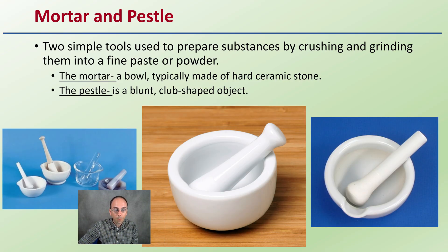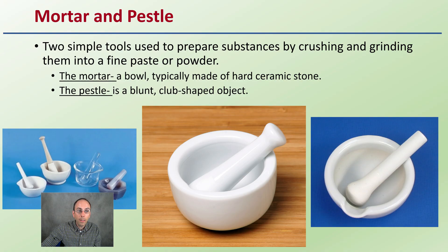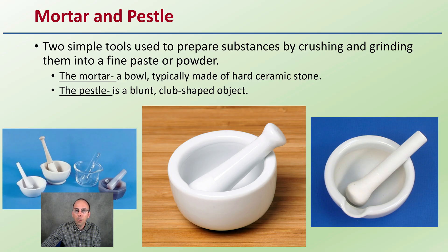The mortar and pestle: the mortar is the bowl and the pestle is the blunt, club-shaped object. They're used for crushing and grinding fine powders, paste, or different substances to get them into a higher surface area that might be utilized for chemical reactions.